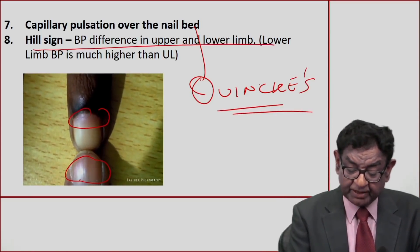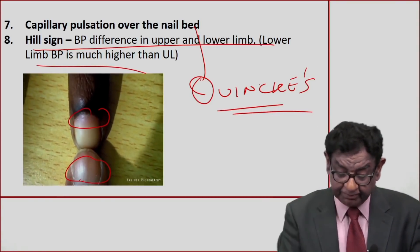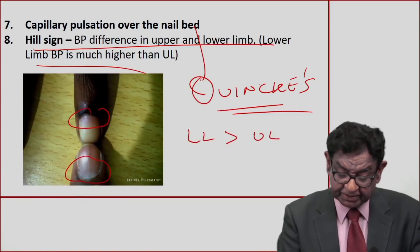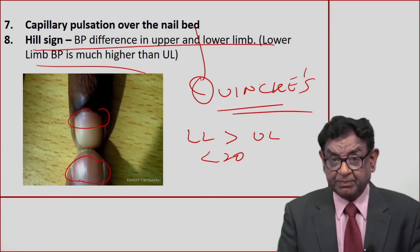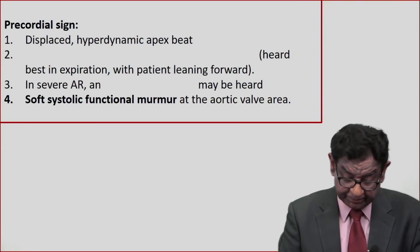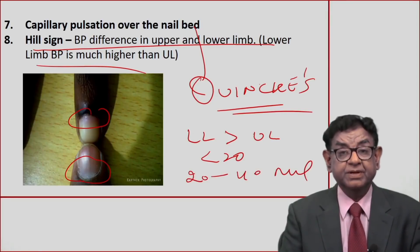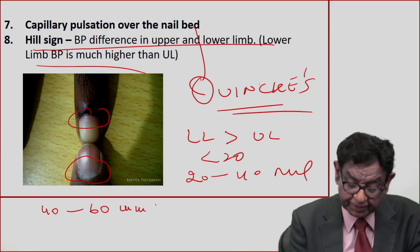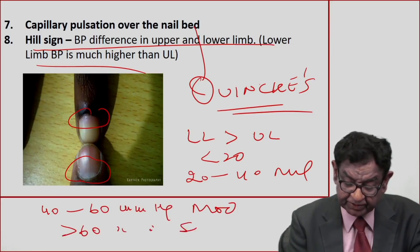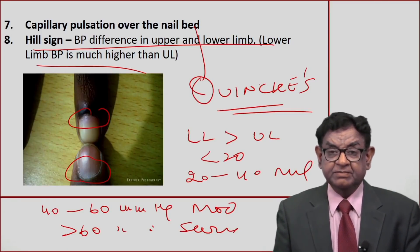Hill's sign: BP difference in systolic pressure between upper and lower limb. Normally the lower limb systolic BP is more than the upper limb but less than 20 mmHg. When the difference is 20–40 mmHg, we call it mild AR; 40–60 mmHg is moderate AR; and more than 60 mmHg is severe AR — so Hill's sign indicates the severity of the disease.